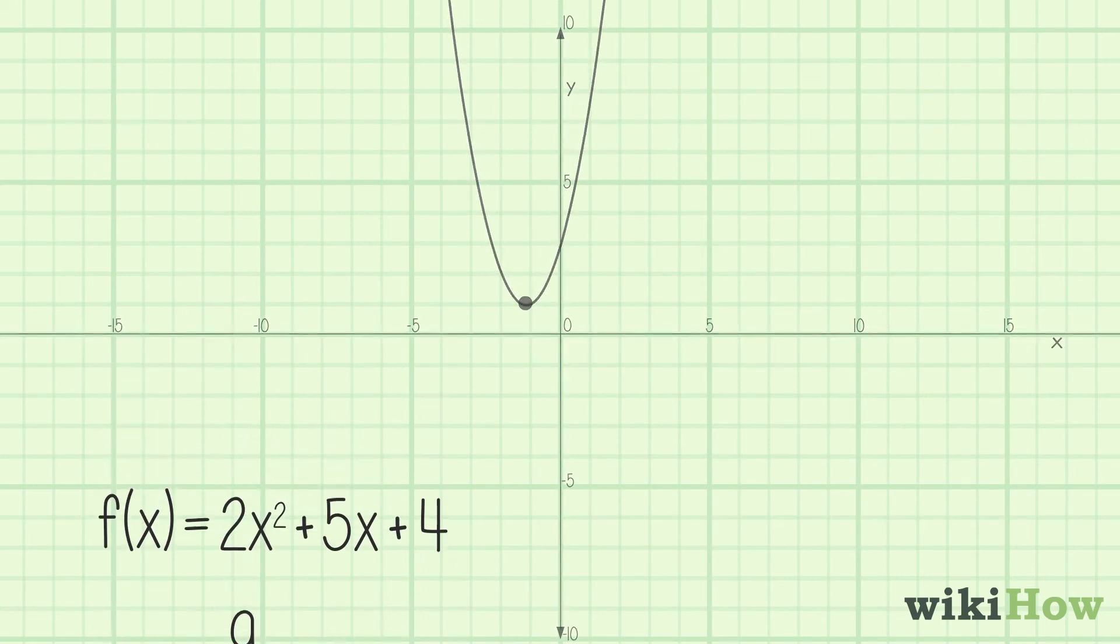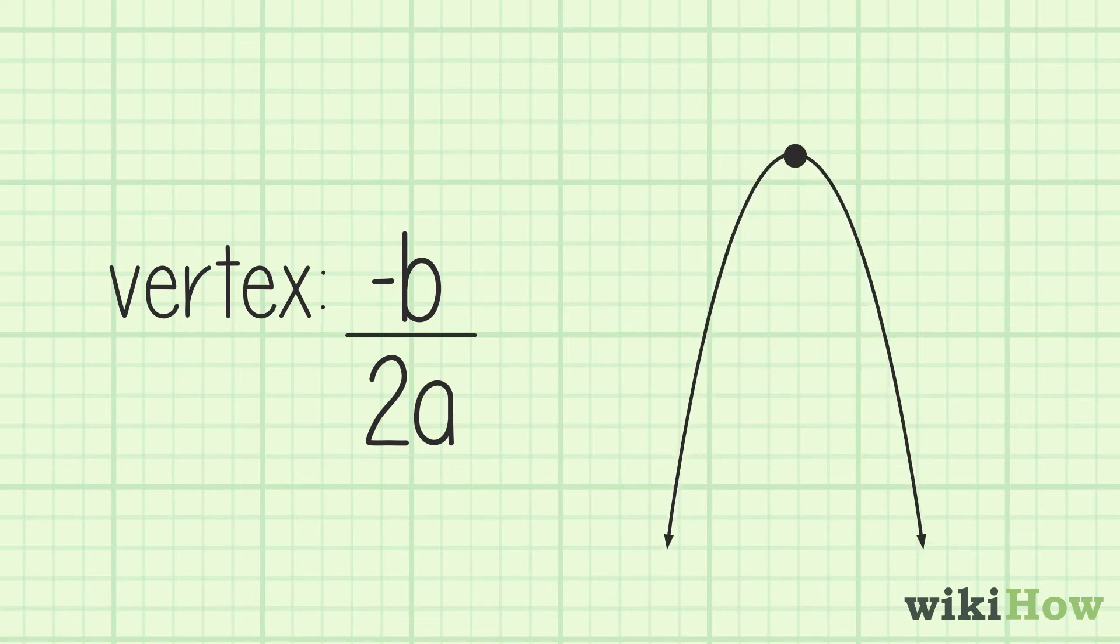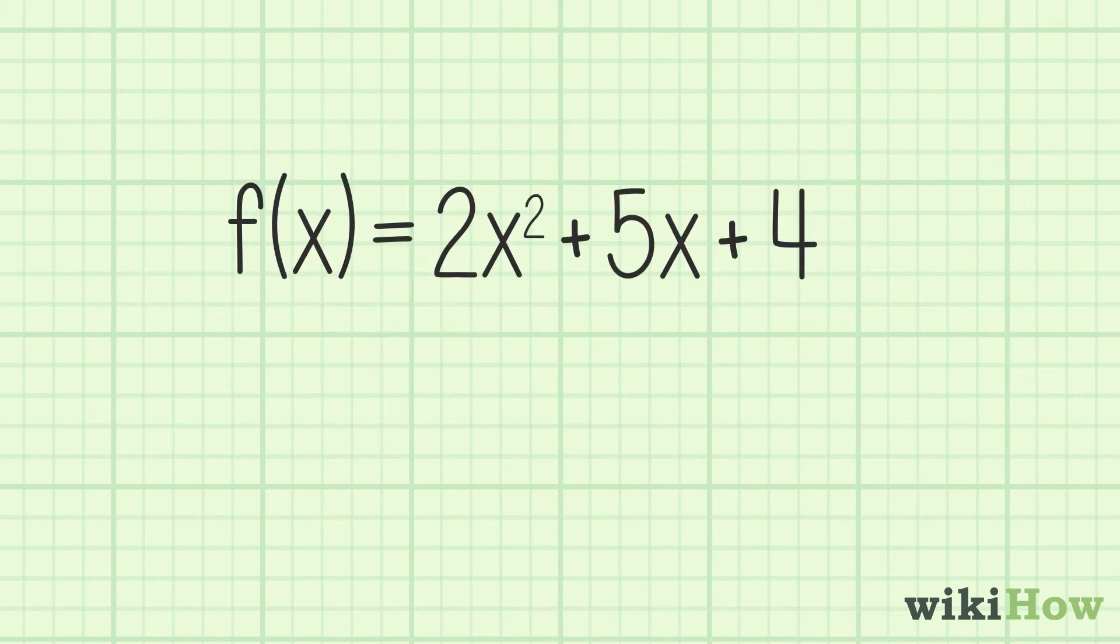Next, find the x value of the vertex by solving negative b over 2a, where b is the coefficient in front of x and a is the coefficient in front of x squared. In the function f(x) equals 2x squared plus 5x plus 4,